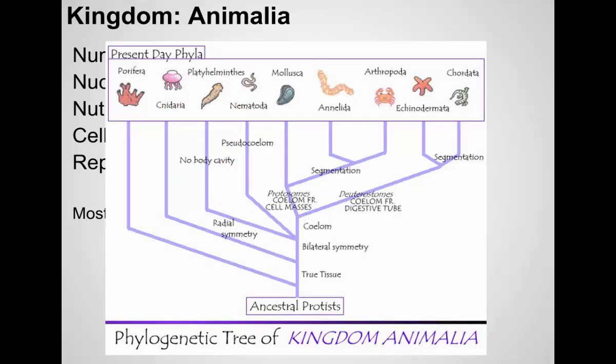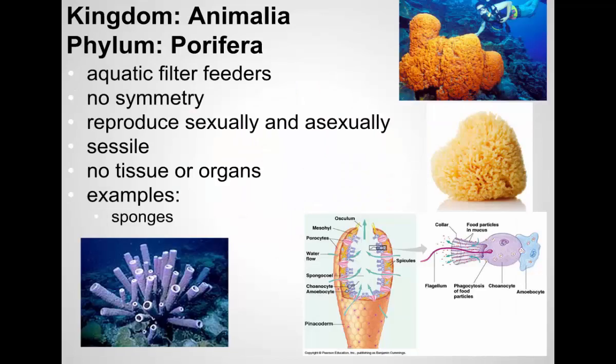If you look at our various groups of animals, they evolved from types of protists. Looking at how they evolved, we have the simple animals like sponges, then things like the cnidarians with radial symmetry and no body cavity, then the worms, mollusks, annelids — the segmented animals — up until we get to the most complex animals, which are the chordates.